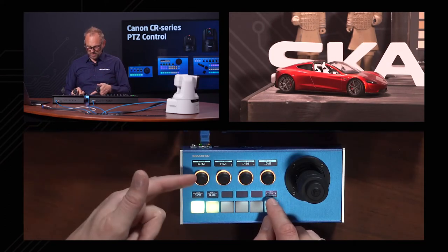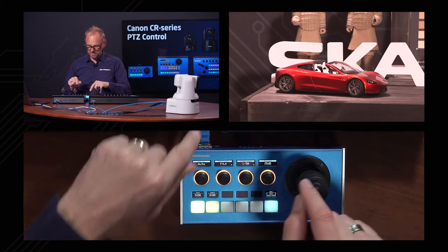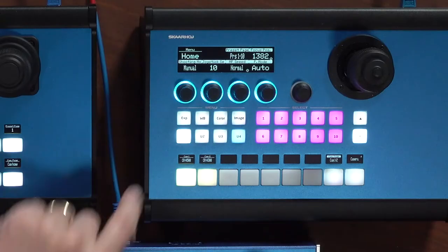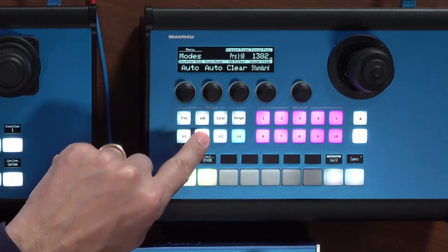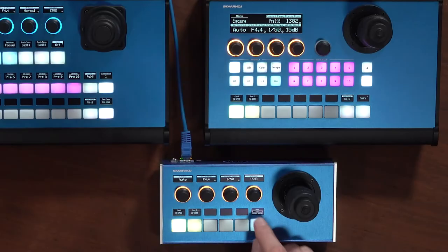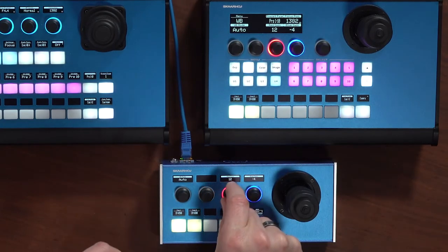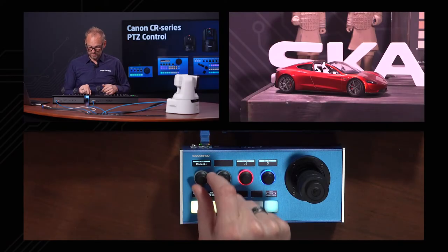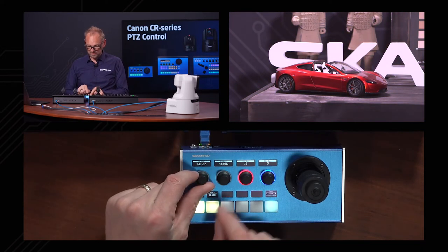Cycling through the menu: we have auto iris, f-stop for iris, and shutter speed. Then automatic exposure gamma limit. If we move on to the next one, we have white balance — and you see these are the same across controllers. If I change it down here, it changes up there because they are talking to the same camera. White balance mode can be changed to tungsten, Kelvin degrees, and so on.